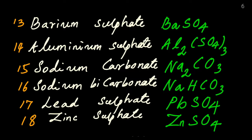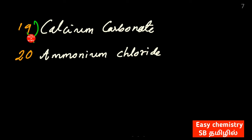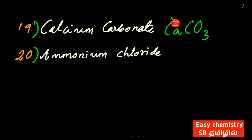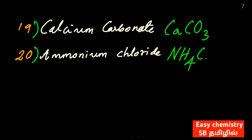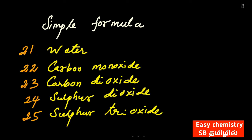Zinc sulfate. So we have 18 formulas with the name. Number 19 is calcium carbonate, number 20 is ammonium chloride. Calcium carbonate formula: CaCO3. Ammonium chloride: NH4Cl. So 20 formulas with the name — first acid, then base, then salt. We will learn the formula.